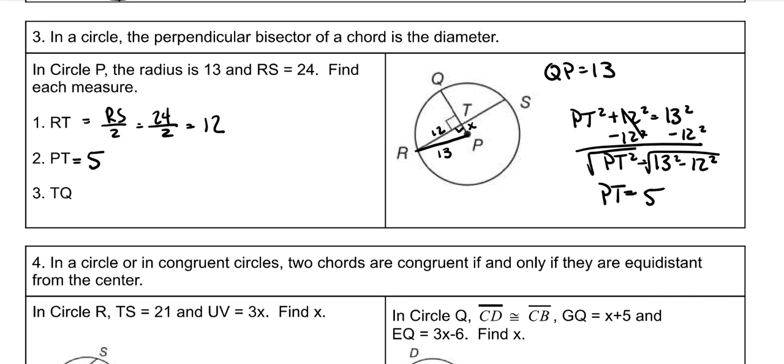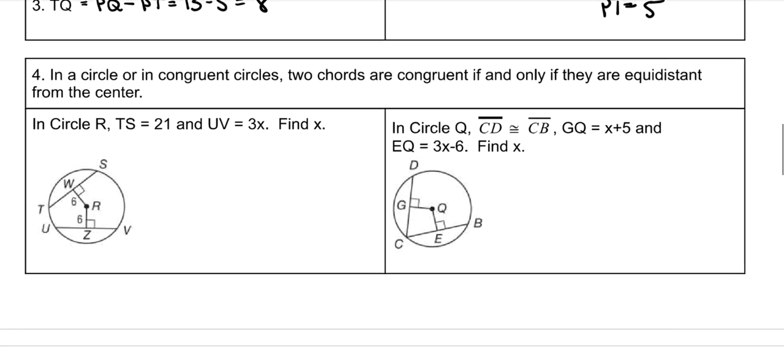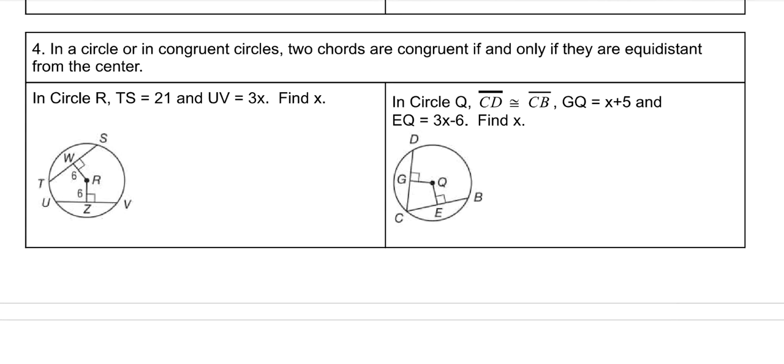And then TQ is the remainder of that radius. So because our radius is 13, TQ would be PQ minus PT. We already know that PQ is the radius, or QP, whichever way you want to name it. So 13, and we just found that PT is 5, so this will be 8.